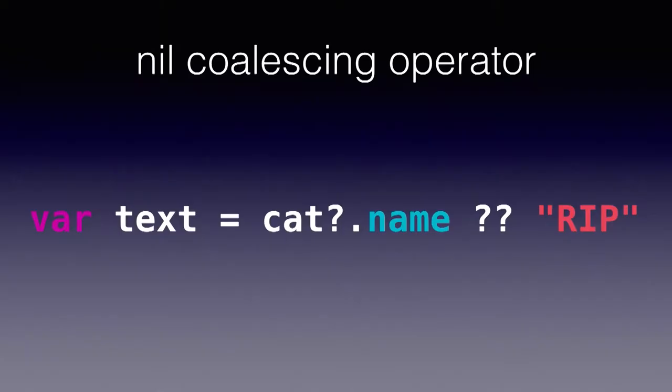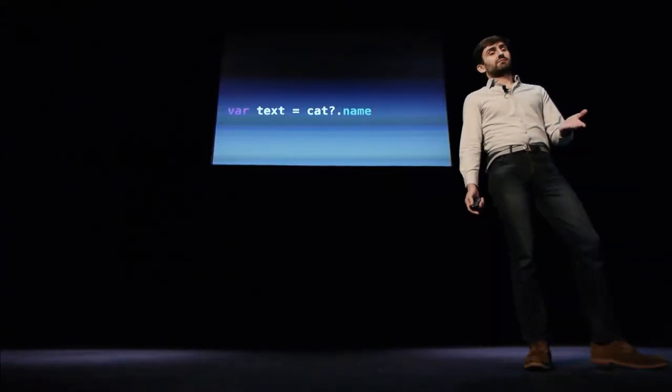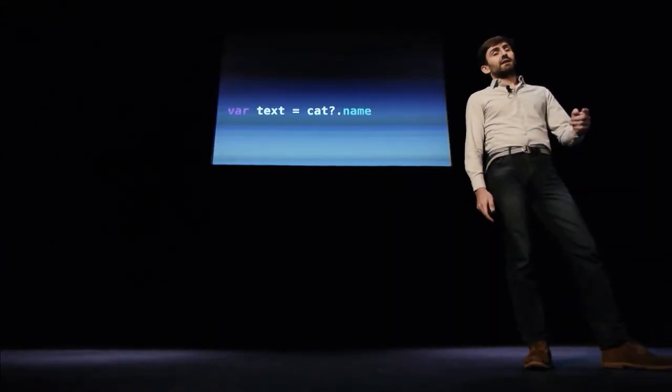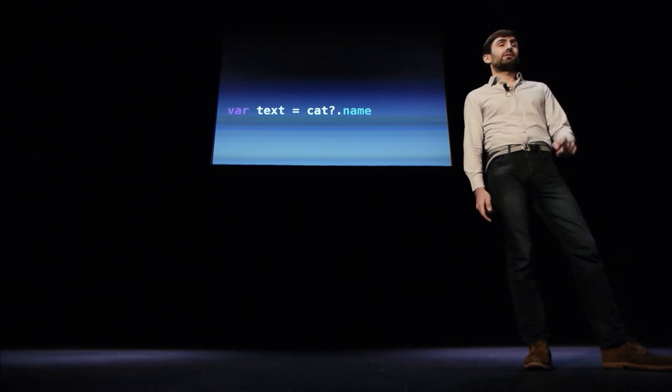Rather than that syntax, you also have a shorter, more compact syntax called the nil coalescing operator — the double question mark. You can read it as: text is the name of the cat if there is a cat, and if not, well, rest in peace. You can get even shorter by just having it without a default, which means if there is no cat and hence no name, text is going to be nil. So text in that case can be either nil or a string — text is an optional string.